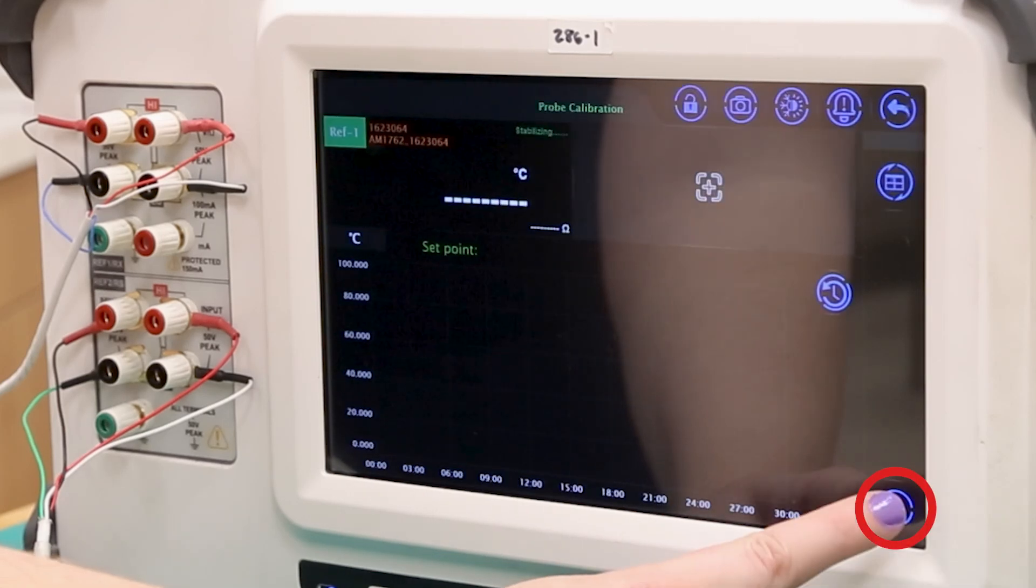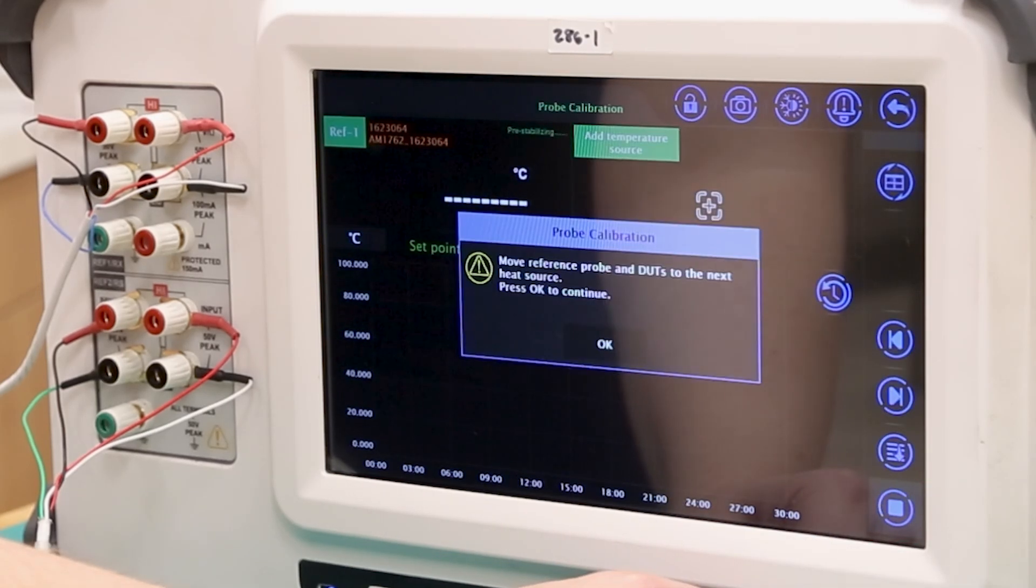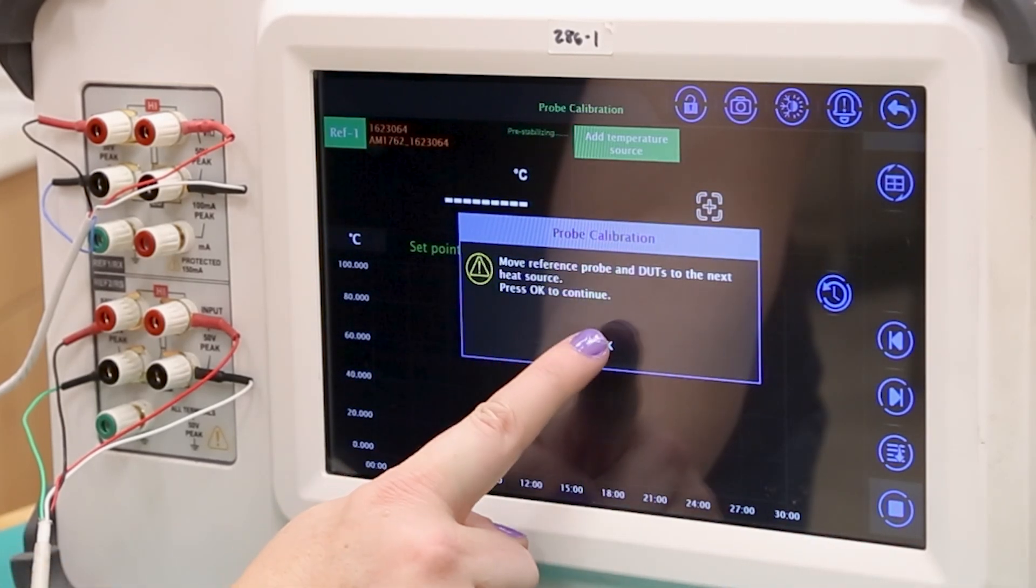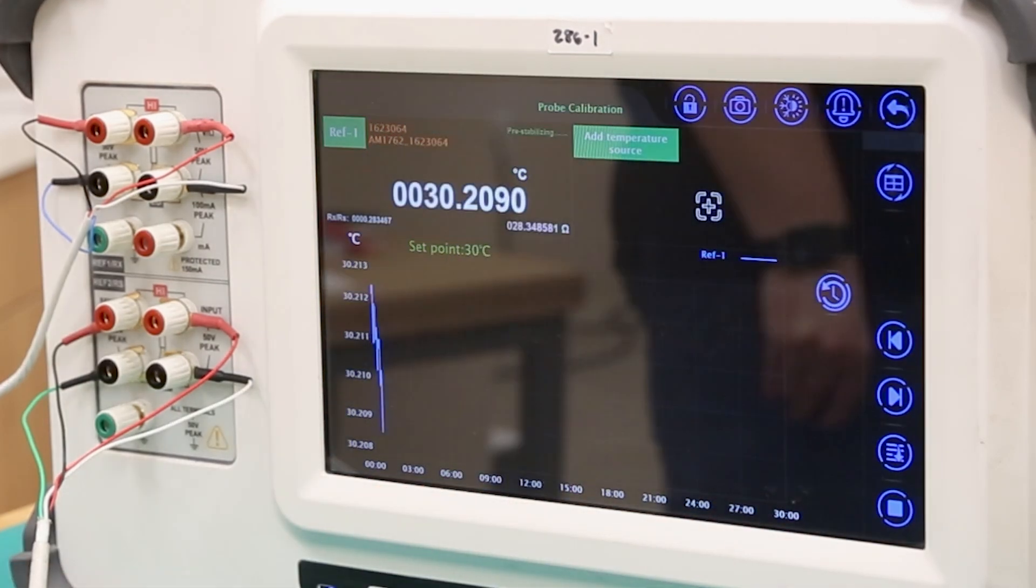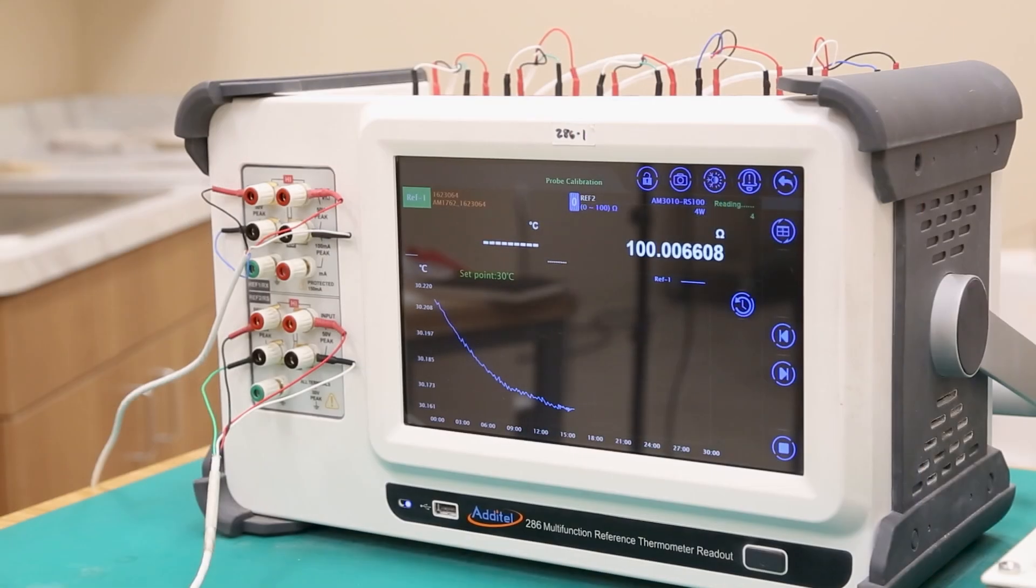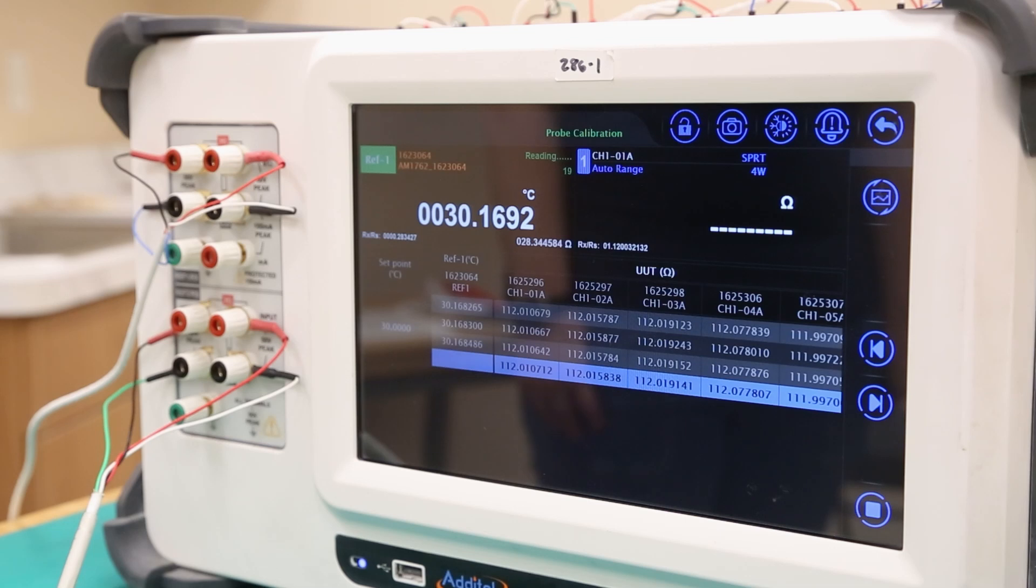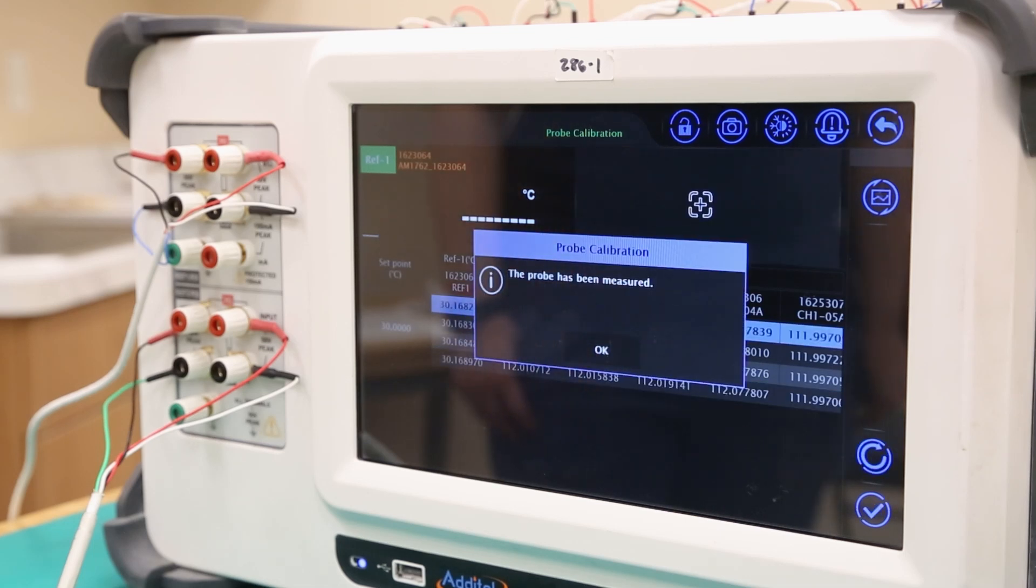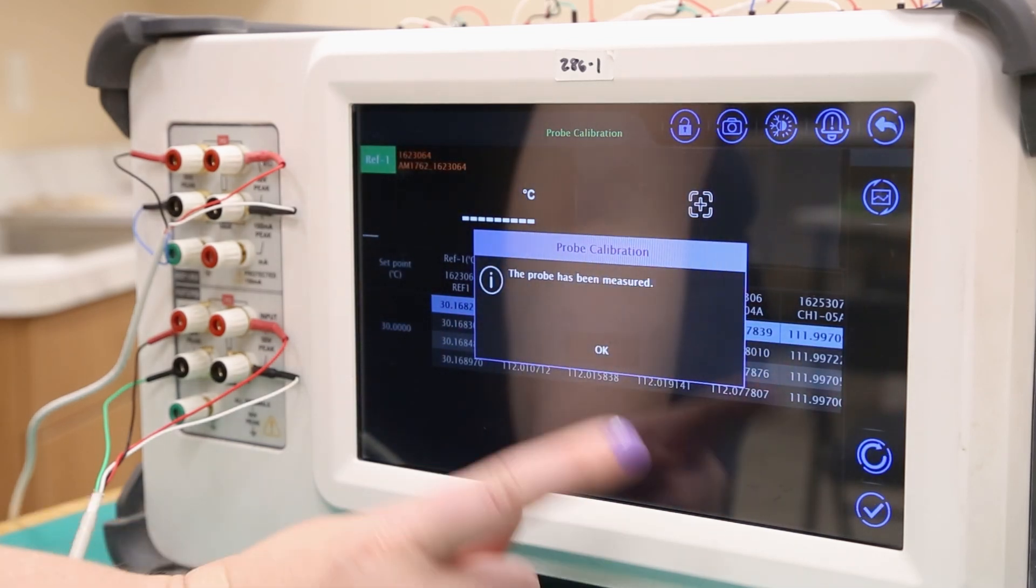Once you select the play button in the bottom right corner, the test will begin. After a brief temperature stabilization period, the 286 will move forward with the comparison measurement of each DUT against the reference probe. This portion of the test is fully automated, and will end with a pop-up window once all probes have been measured according to the test settings.